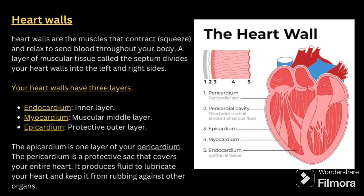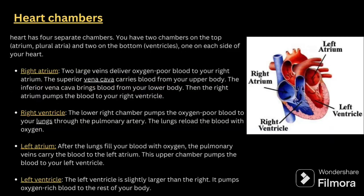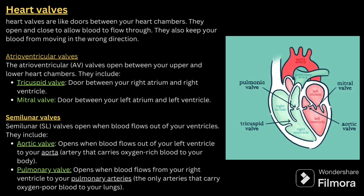Next, talk about the chambers. The heart has four separate chambers — two on top called atria and two at the bottom called ventricles. The right atrium receives blood from the superior vena cava (upper body) and inferior vena cava (lower body). From the right atrium, blood moves to the right ventricle, which pumps deoxygenated blood to the lungs through the pulmonary artery. After the lungs purify the blood, the pulmonary veins carry it to the left atrium, which pumps it to the left ventricle. The left ventricle then carries oxygenated blood to different parts of the body.